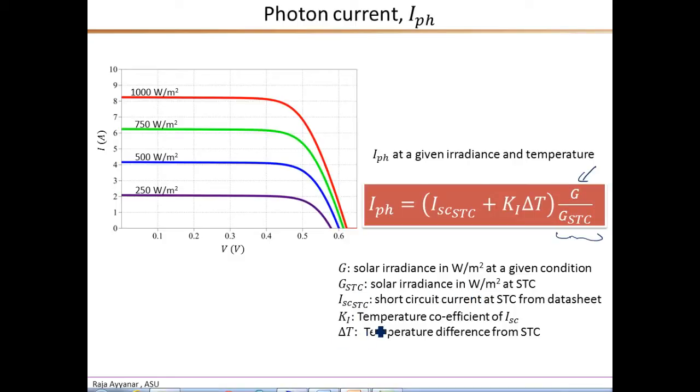Then the other effect is the effect of the temperature, and the data sheets give this temperature coefficient of the short-circuit current ISC. So that is this K sub I. So we add this term Ki times delta T, where delta T is the temperature difference between our operating condition and the STC, which is 25 degree Celsius cell temperature. Now Ki times delta T gives the variation in the photon current, and we just add that to the short-circuit current under STC. So this equation gives the complete photon current under any general condition of solar irradiance and temperature.